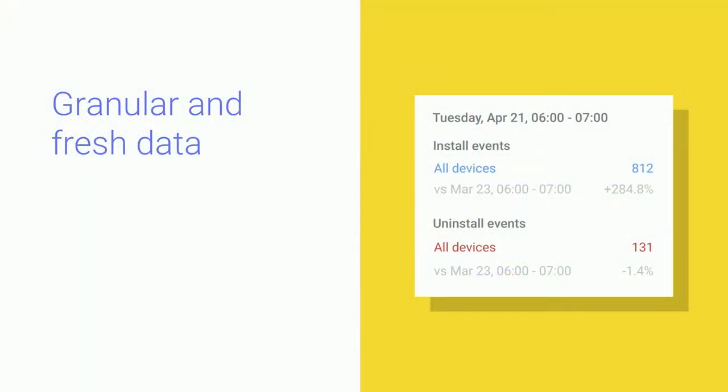Next, for some of our metrics available, such as the install, update, and uninstall events, you can now select to see hourly data instead of daily. Reducing the latency of our metrics has been one of your loudest concerns, and we've taken that really seriously. I'm happy to announce that for the metrics available hourly, you should expect them to be updated within a few hours.